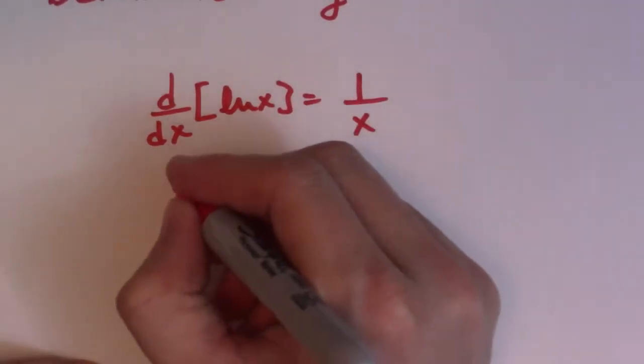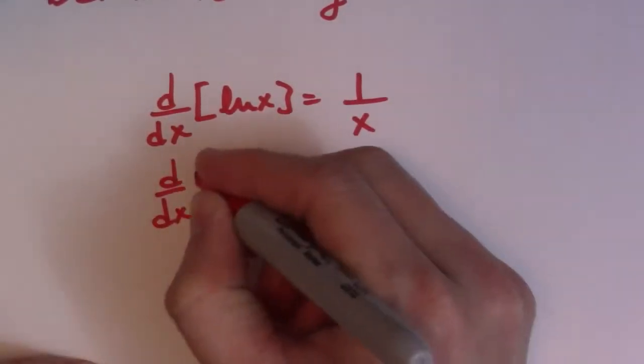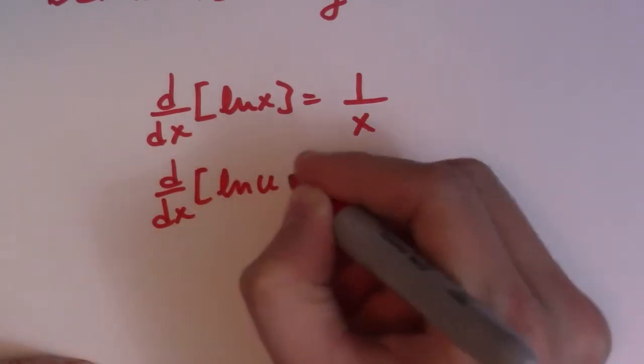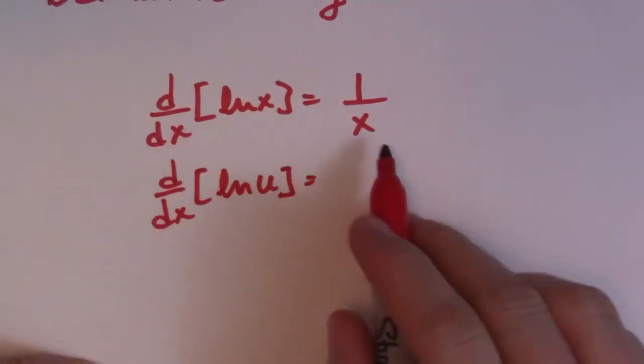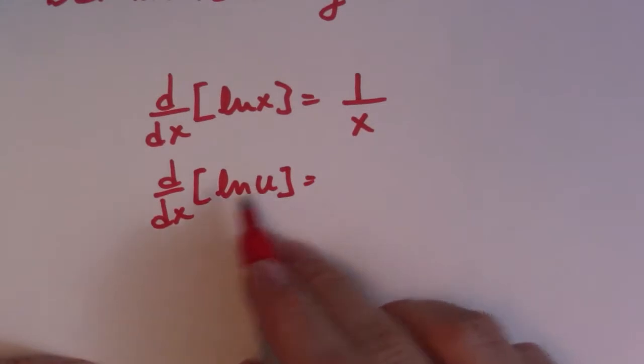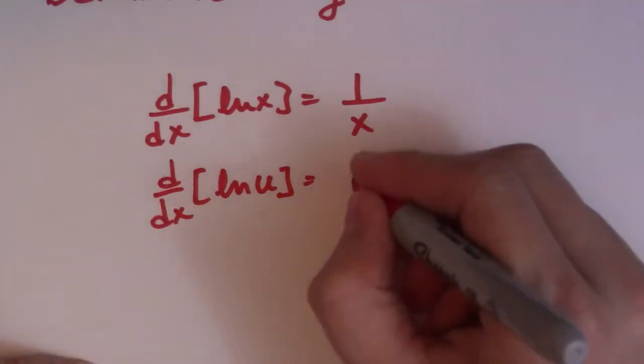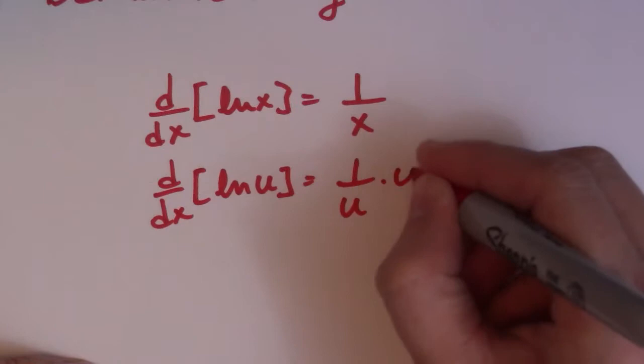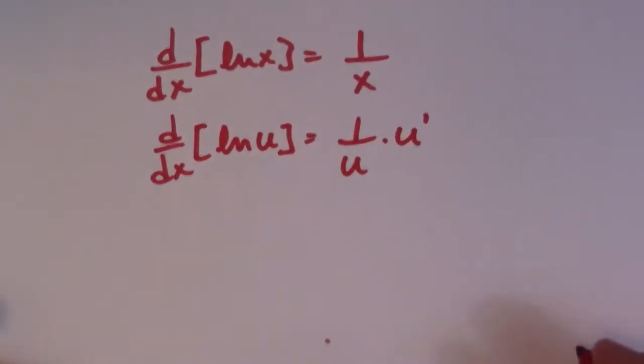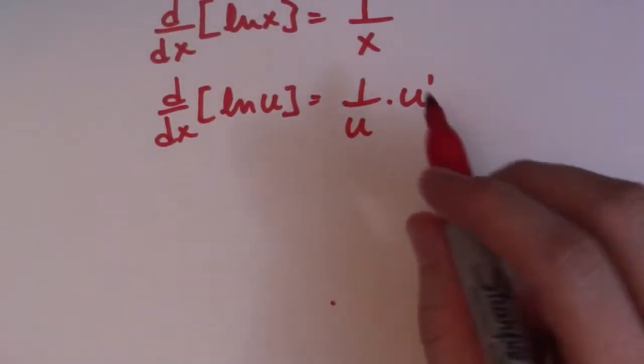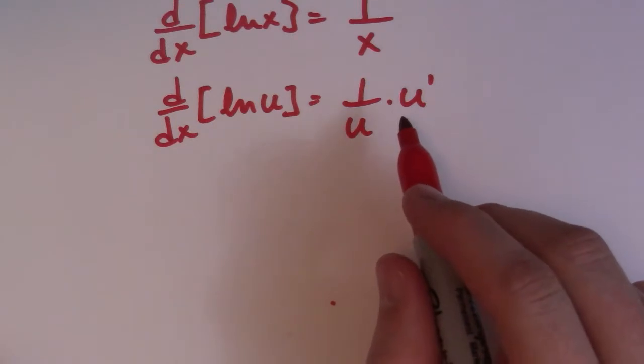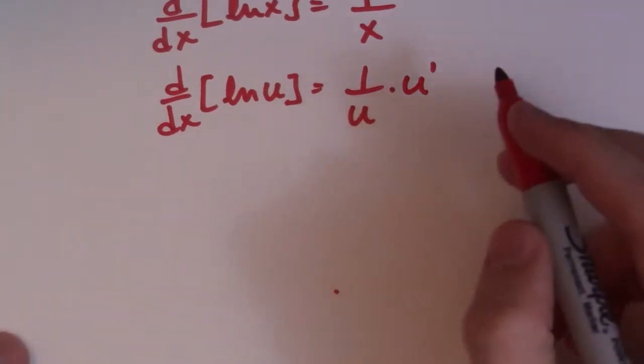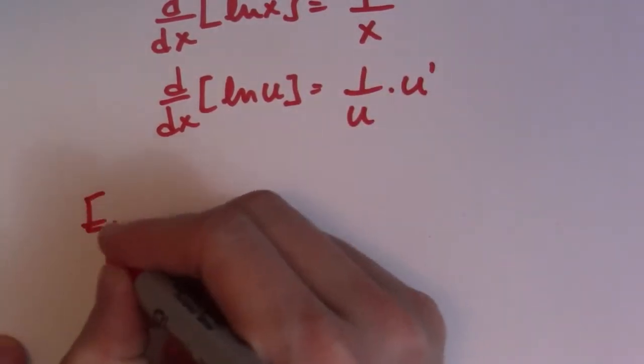My students prefer this definition, d over dx, ln of u, because most likely you're not going to tackle this guy by itself. There's going to be something here. So ln of u, and that's 1 over u times u prime. So let's look at a couple of examples where you might see this and where you might have to deal with this in a test situation. So let's start fairly simple.